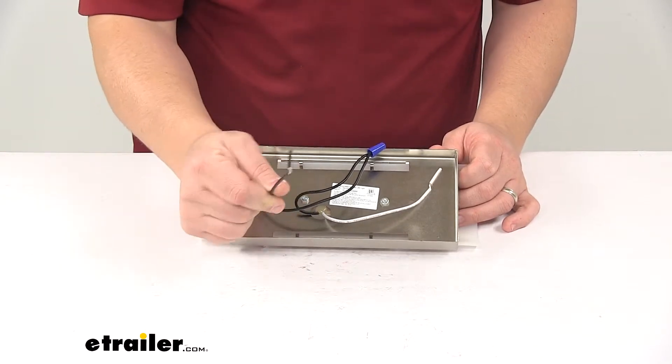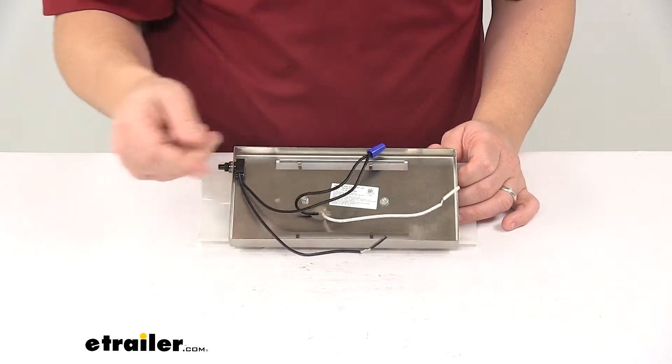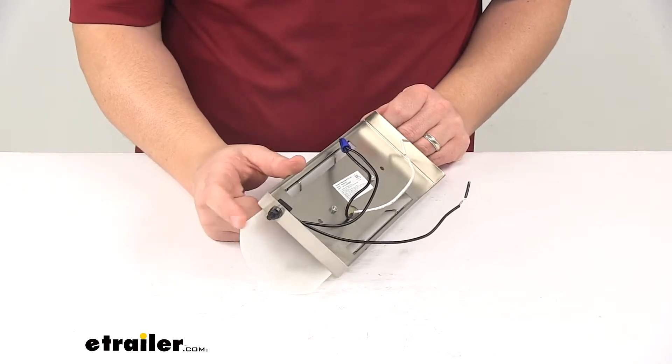Two wire design: black wire is your power wire, white wire is your ground wire, and it has a built in on and off switch.